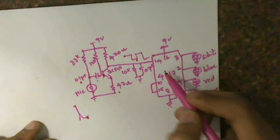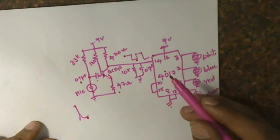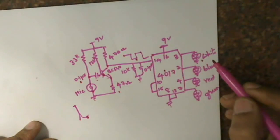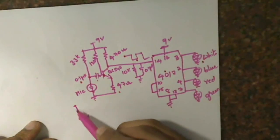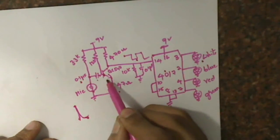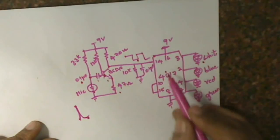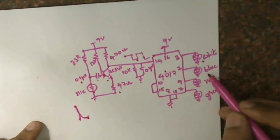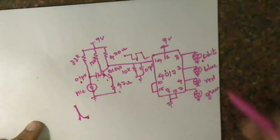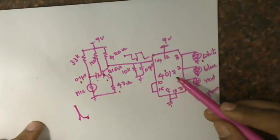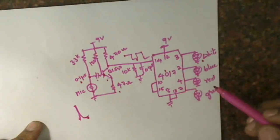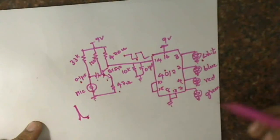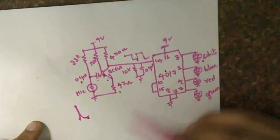The 4017 is triggered and it changes state. For example, initially the third pin is high, so the white LED will be glowing. When I clap and a peak of sound is heard, this transistor will send another clock and the 4017 will go to its next state. The next state is at the second pin, so the blue will be on and white will be off. For my next clap, the 4017 will shift to the next state — that's red at the fourth pin. So red will be on and the other two will be off.